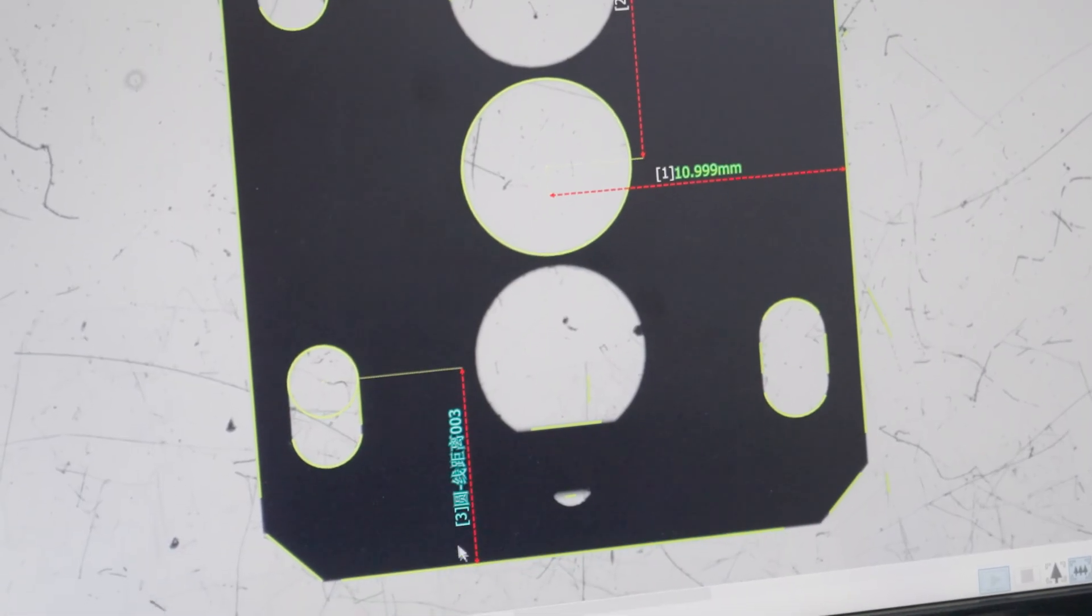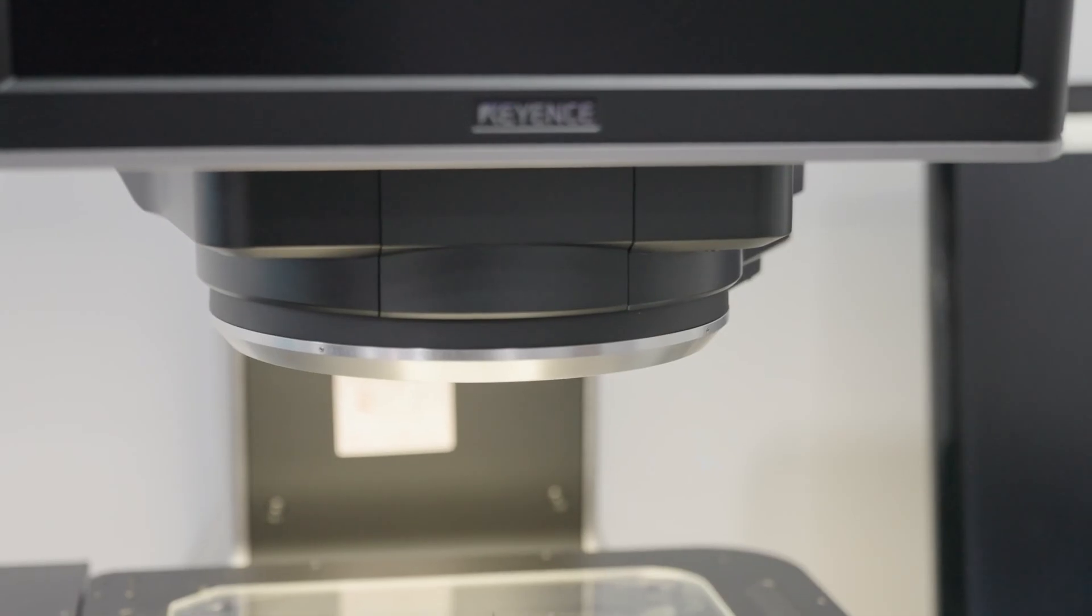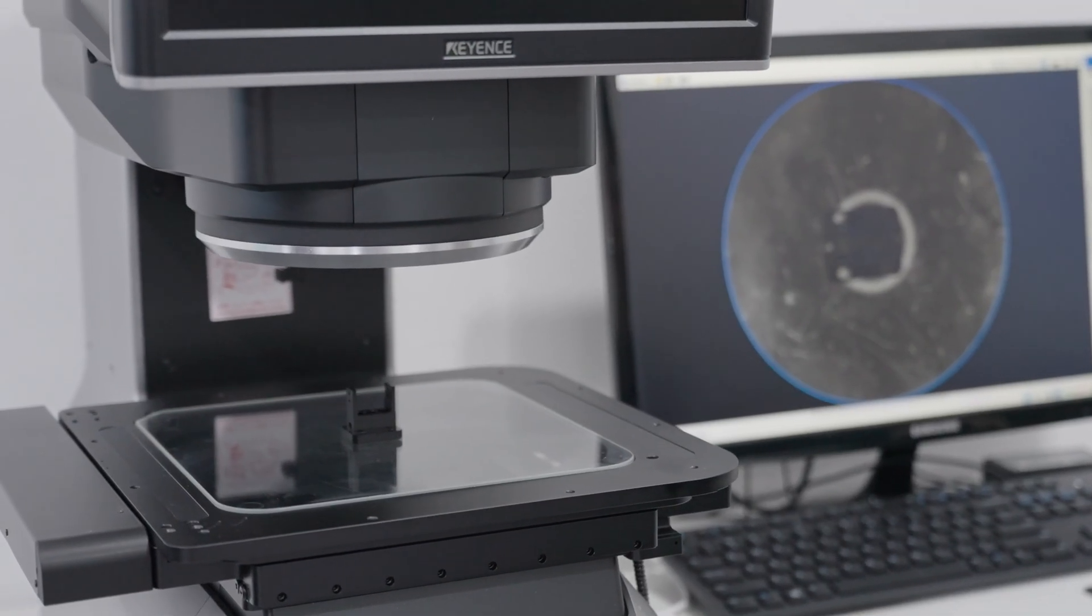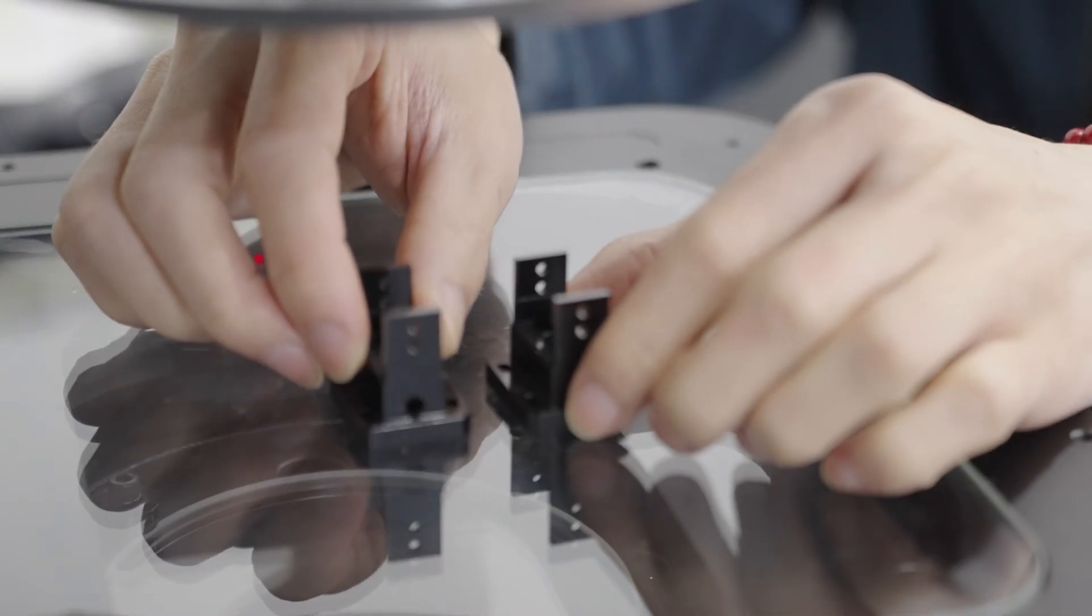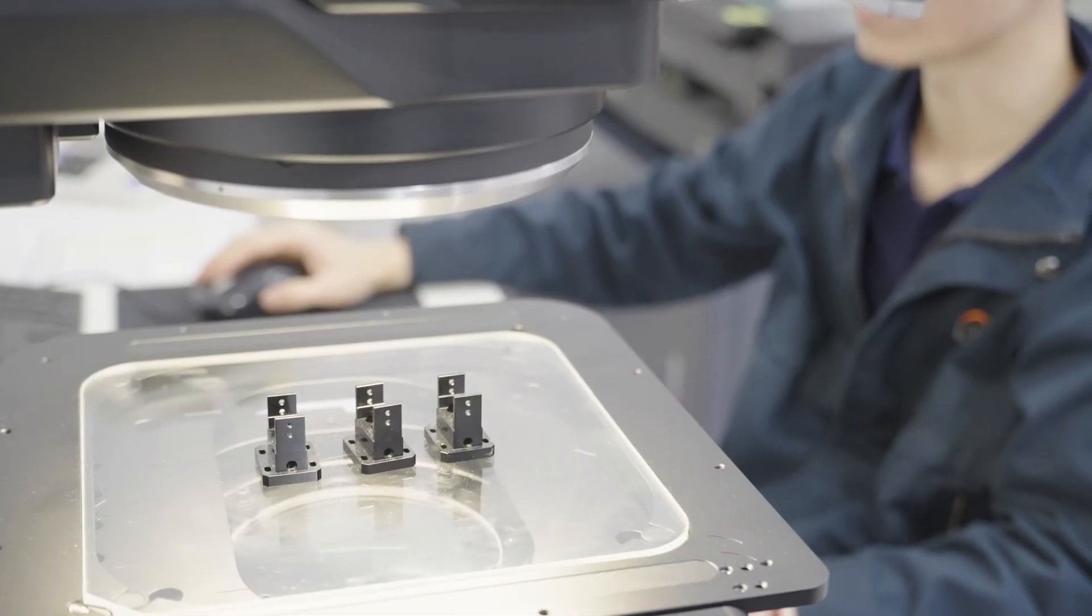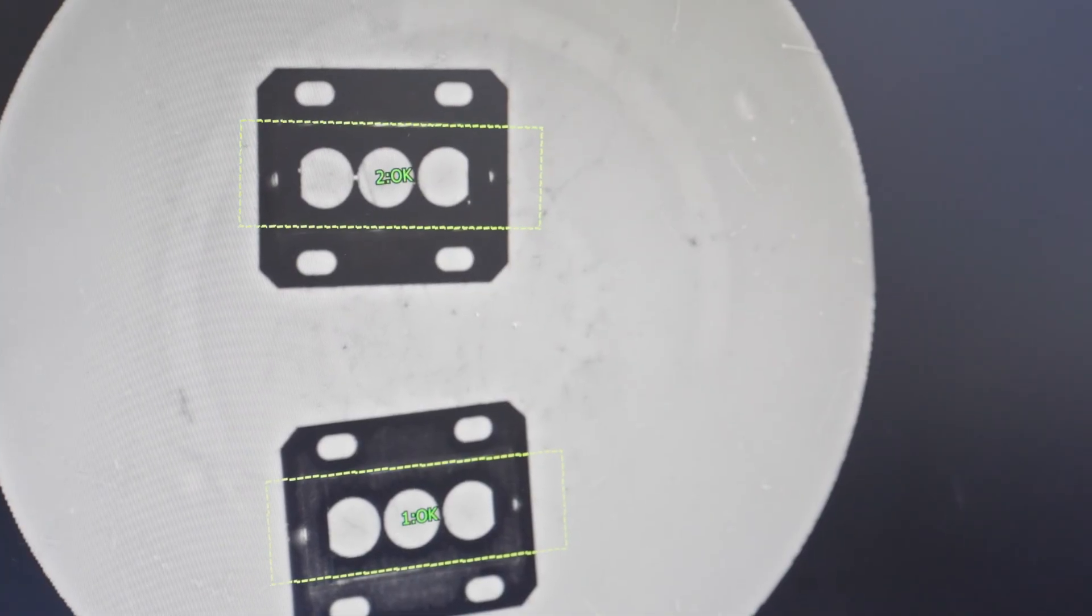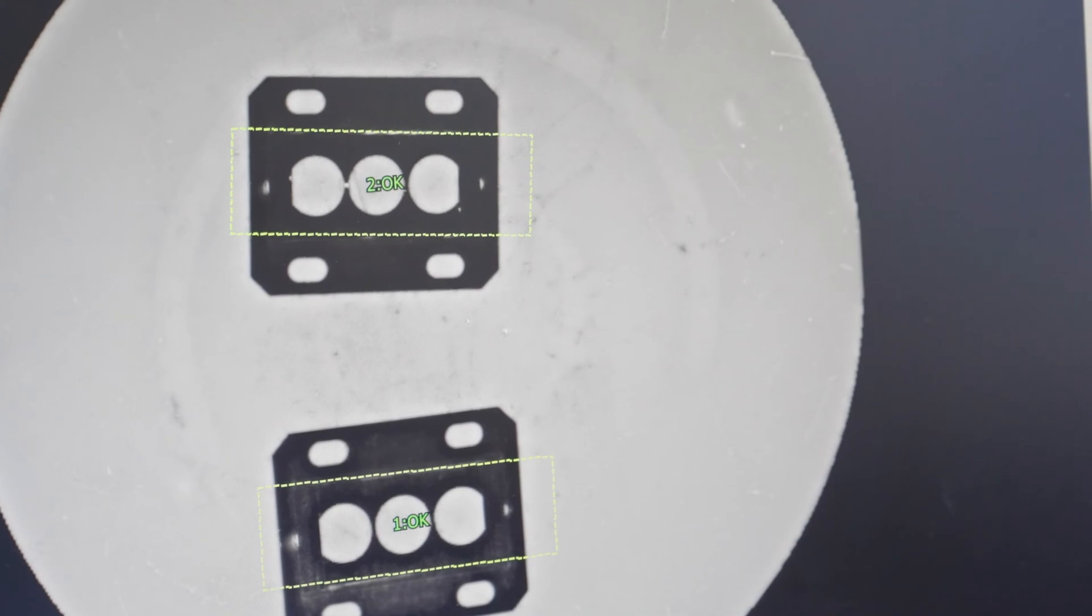Now we are doing the preliminary programming and setting up the system. As you can see, the device has already started to work and took photos of the components. When the system is programmed, what you need to do is change the parts one by one. The equipment will take photos of all the parts. By this method, the entire process is very fast and efficient.